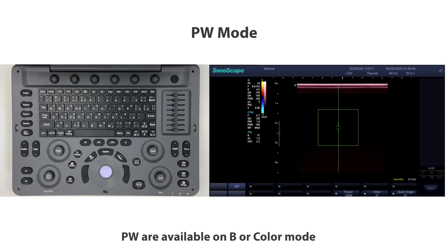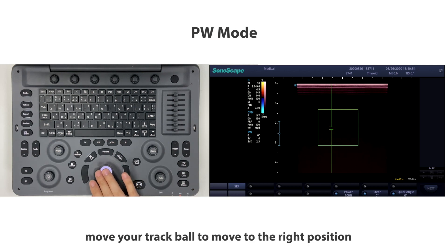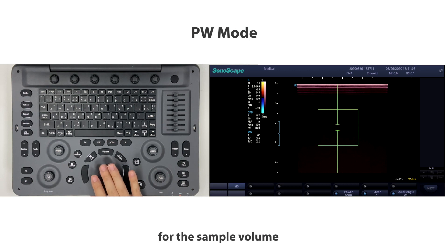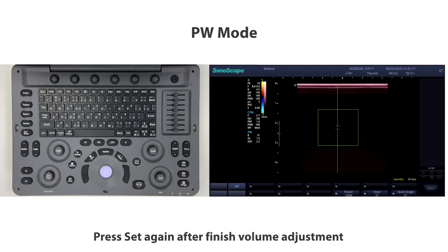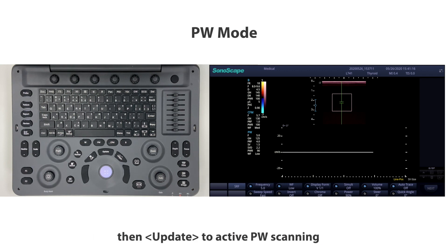Press the PW button to enter PW mode. PW is available in B or color mode. The sample volume appears in the center of the image — move the trackball to the right position, then press Set to activate size adjustment for the sample volume. Move the trackball again to adjust the volume size.